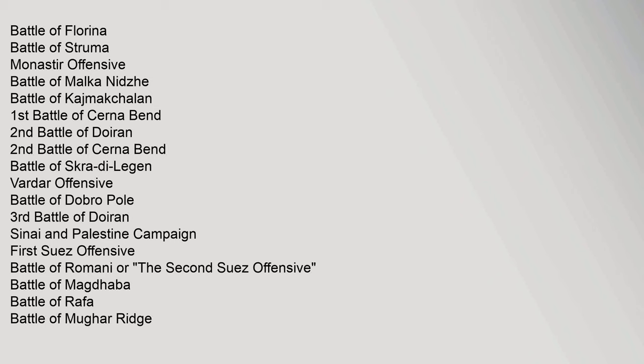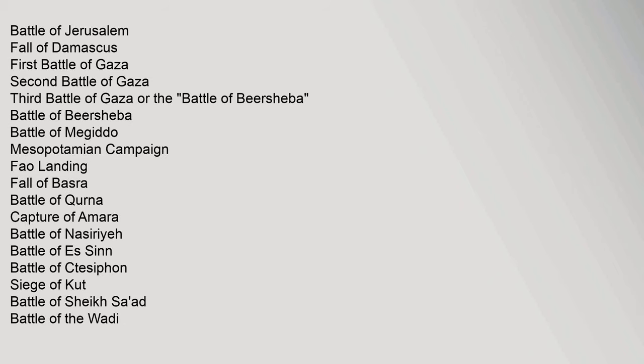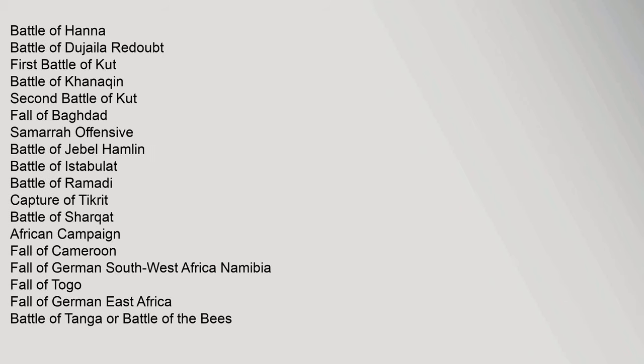Sinai and Palestine Campaign: First Suez Offensive; Battle of Romani (the Second Suez Offensive); Battle of Magdhaba; Battle of Rafa; Battle of Mughar Ridge; Battle of Jerusalem; Fall of Damascus; First Battle of Gaza; Second Battle of Gaza; Third Battle of Gaza or the Battle of Beersheba; Battle of Megiddo. Mesopotamian Campaign: Fao Landing; Fall of Basra; Battle of Qurna; Capture of Amara; Battle of Nasiriyah; Battle of Es-Sinn; Battle of Ctesiphon; Siege of Kut; Battle of Sheikh Sa'ad; Battle of the Wadi; Battle of Hanna; Battle of Dujaila Redoubt; First Battle of Kut; Battle of Khanaqin; Second Battle of Kut; Fall of Baghdad; Samarra Offensive; Battle of Jebel Hamrin; Battle of Istabulat; Battle of Ramadi; Capture of Tikrit; Battle of Sharqat. African Campaign: Fall of Cameroon; Fall of German Southwest Africa (Namibia); Fall of Togo; Fall of German East Africa; Battle of Tanga or Battle of the Bees.